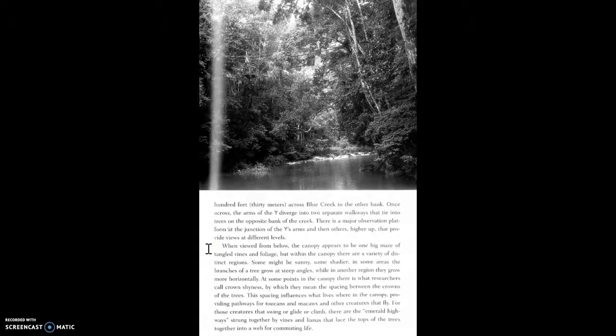When viewed from below, the canopy appears to be one big maze of tangled vines and foliage. But within the canopy there are a variety of distinct regions. Some might be sunny, some shadier. In some areas the branches of a tree grow at steep angles, while in another region they grow more horizontally.